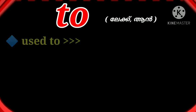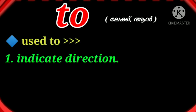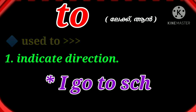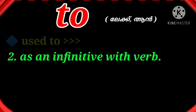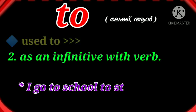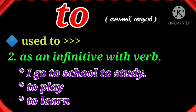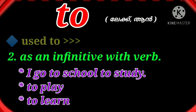The preposition 'to' is used to indicate direction — for example, I go to school, she goes to Mumbai. Also, if we want to convert a verb into an infinitive, we need to add the preposition 'to' just before that verb — for example, I go to school to study. So: to study, to learn, to play, I want to play.